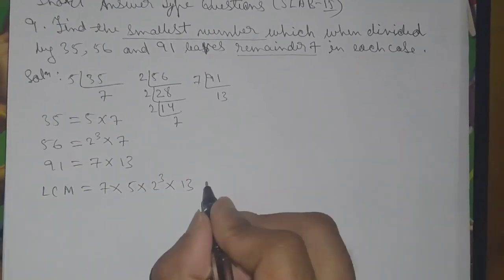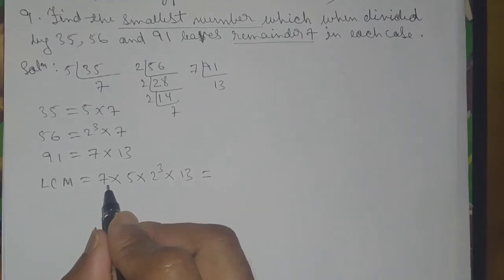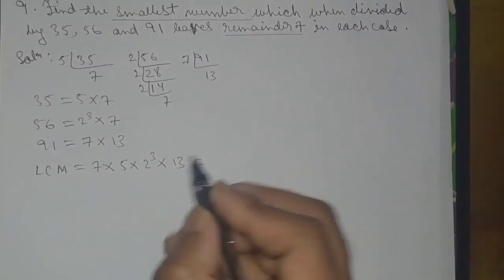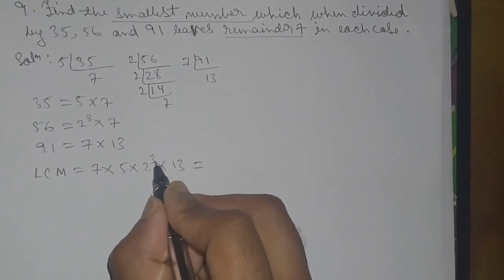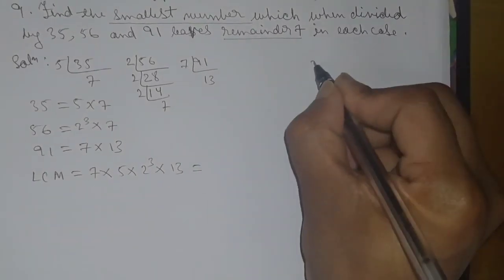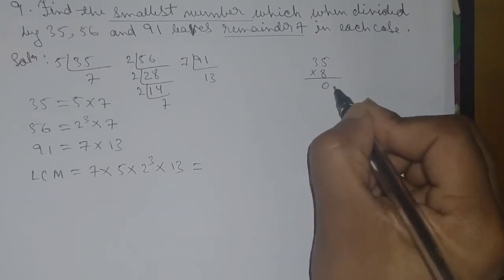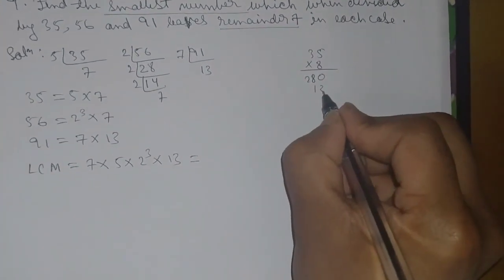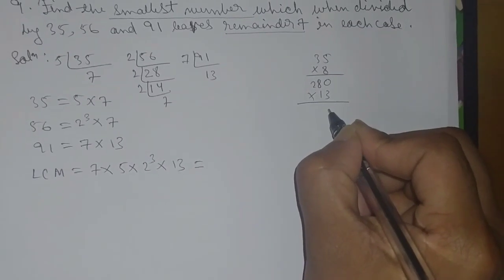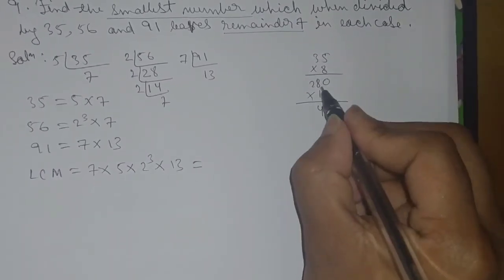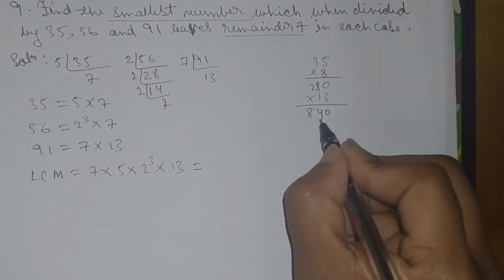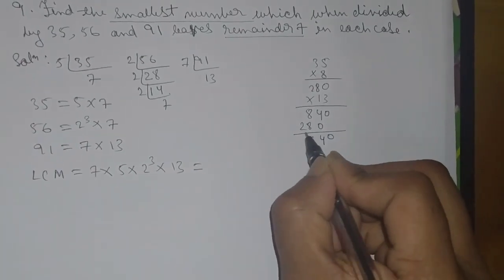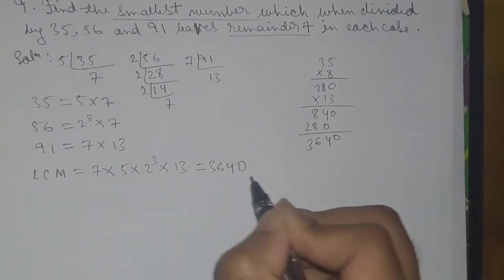So LCM equals 7 into 5 into 8 into 13. Seven fives are 35, eight fives are 40, 35 into 8 = 280. Then 280 into 13: three times 280 is 840, and the calculation gives LCM equal to three thousand six hundred and forty.